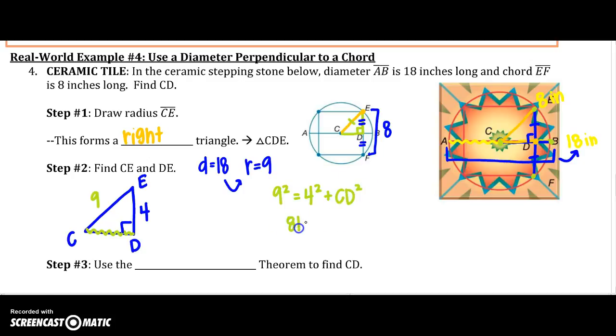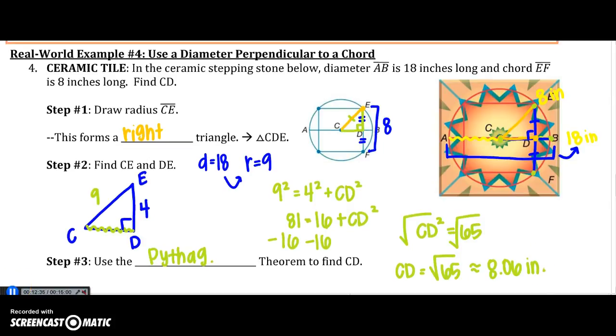So 81 equals 16 plus CD squared. Subtract 16 from both sides. So CD squared is going to equal 65. So if I take the square root because I use the Pythagorean Theorem, I know that C, D is the square root of 65 or about 8.06. All right, go ahead and stop this video and try your next checkpoint using the Pythagorean Theorem.